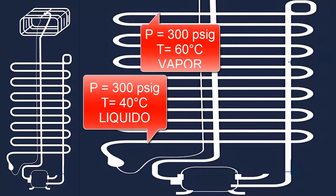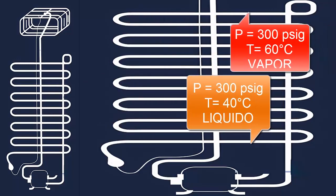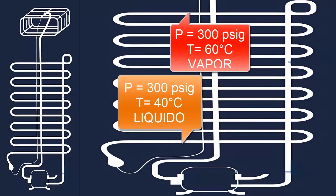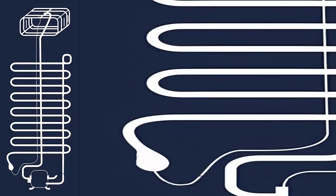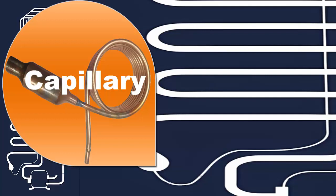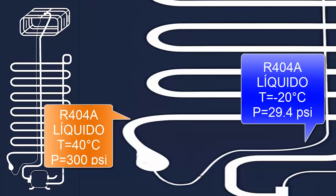The R404A, now in a liquid state and at a temperature close to the ambient, exits the condenser and heads to the capillary tube to restart the cycle. In the capillary tube, the pressure and temperature of the refrigerant decrease considerably, so it returns to the initial pressure of 29.4 pounds per square inch and minus 20 degrees Celsius, restarting the refrigeration cycle.